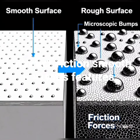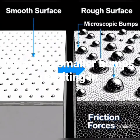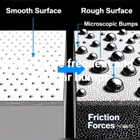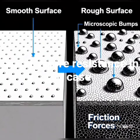Smooth surfaces feature fewer and smaller bumps, resulting in less friction, while rough surfaces have larger, more frequent, and irregular bumps causing more resistance.